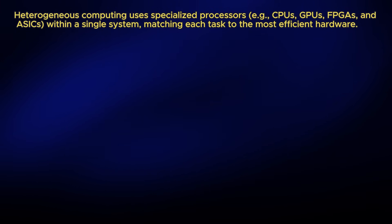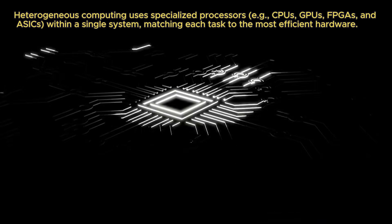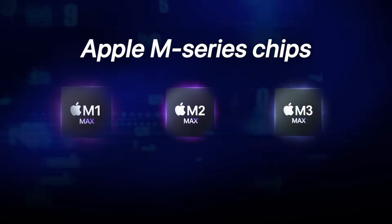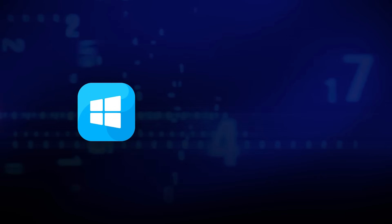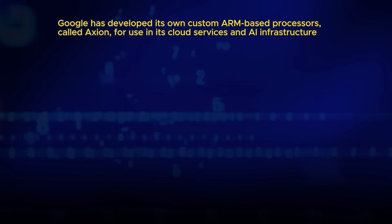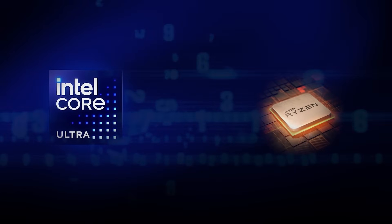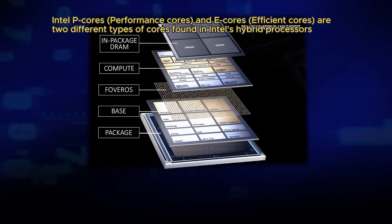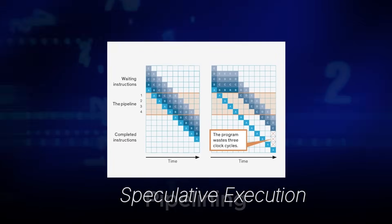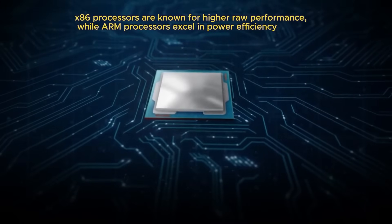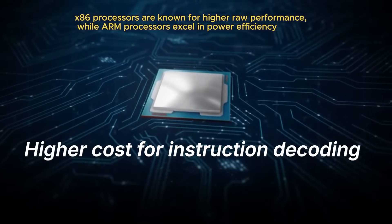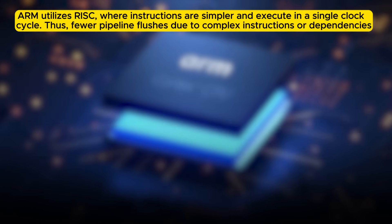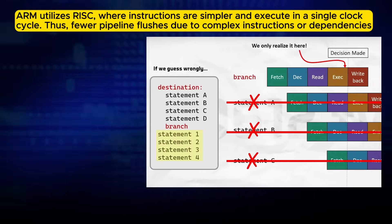The future of computing is moving towards heterogeneous, energy-aware, and specialized architectures, and ARM is well positioned here. Apple's M-Series chips prove that ARM can deliver high-end desktop performance, and companies like Microsoft and Google are investing heavily in ARM-based chips for laptops and servers. On the x86 side, Intel and AMD are innovating with hybrid architectures — Intel's p-cores and e-cores — 3D stacking, and AI acceleration. Internally, both architectures use pipelining, speculative execution, and out-of-order execution to improve performance, but x86 often pays a higher cost for instruction decoding and legacy behavior.